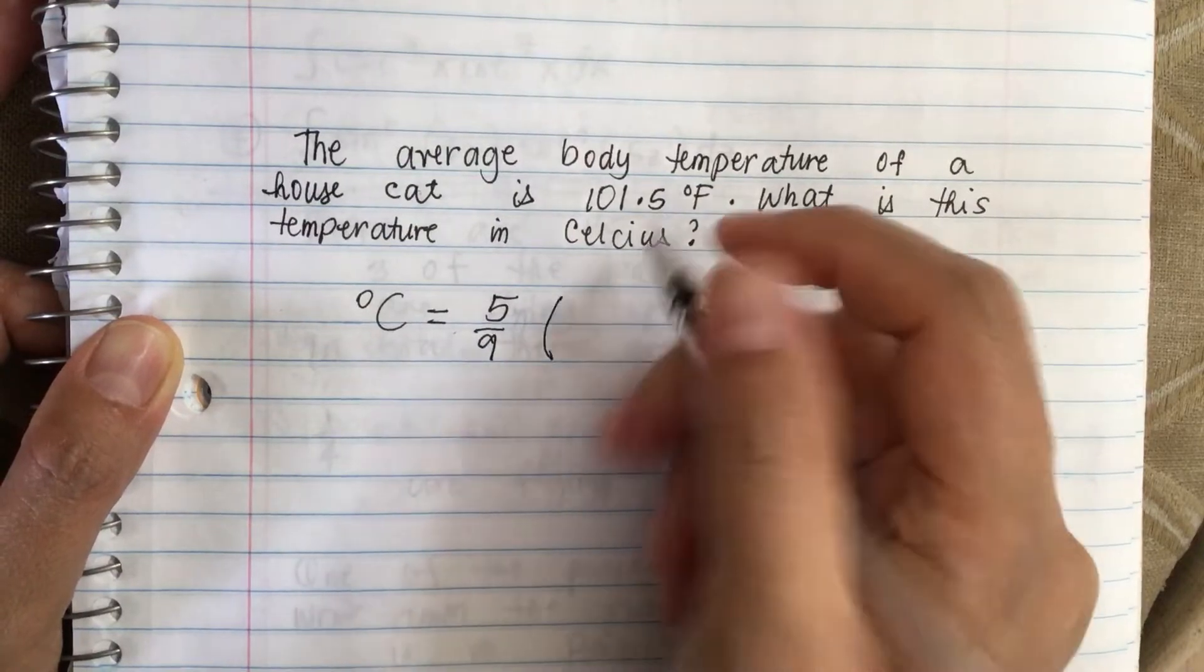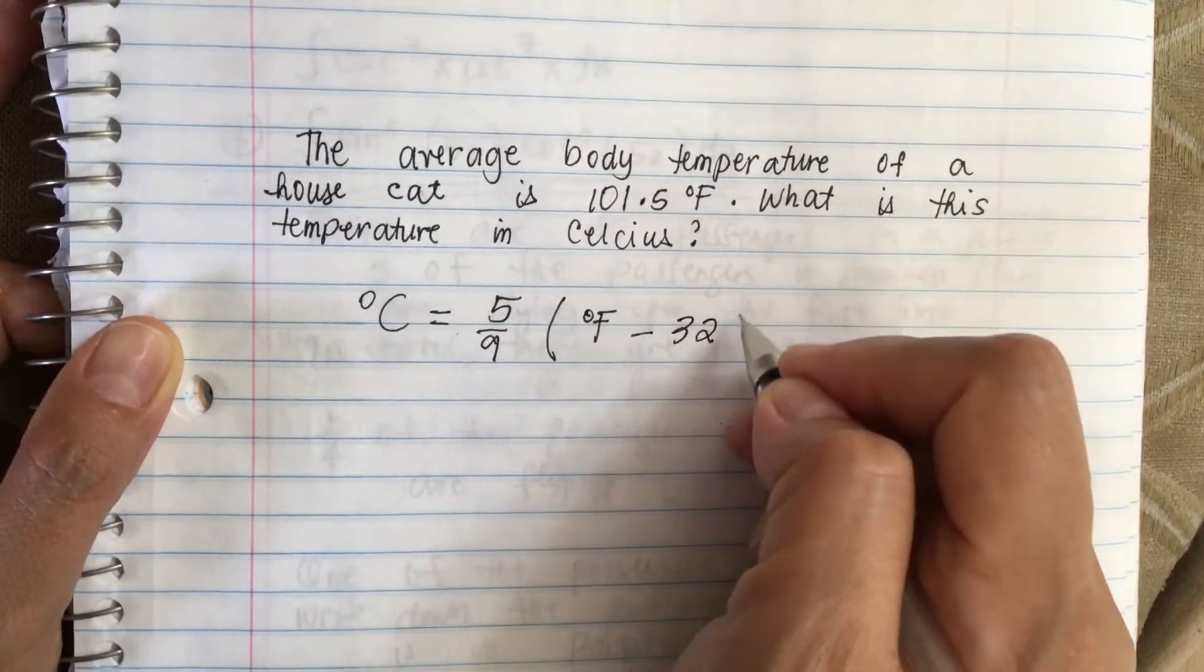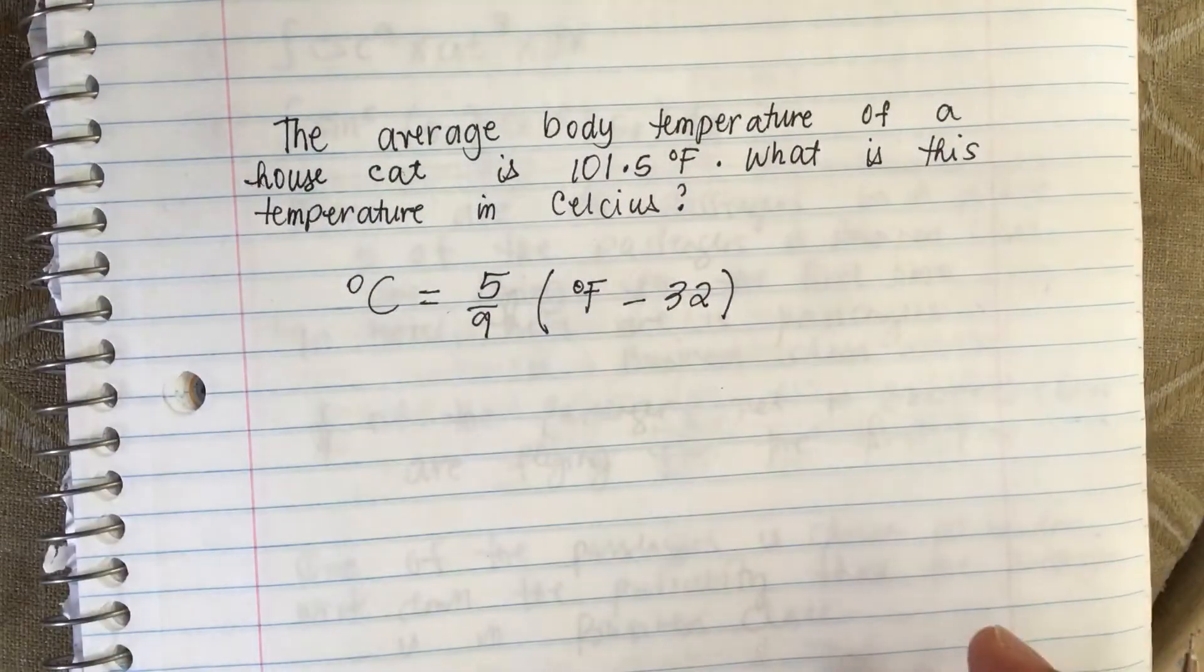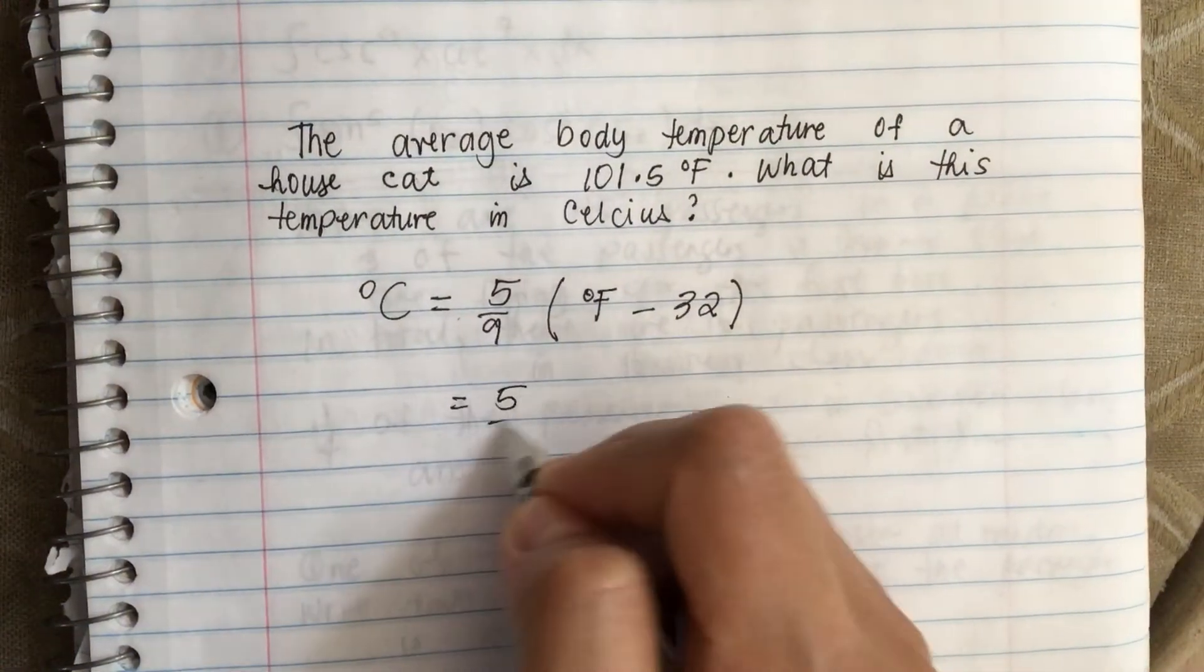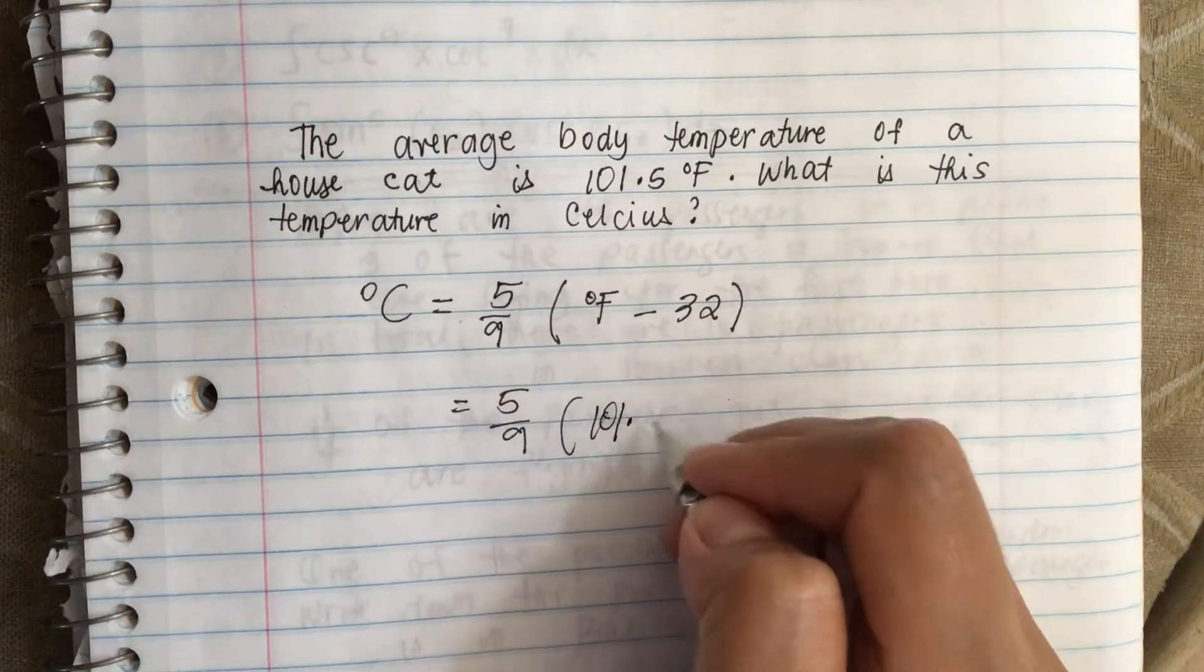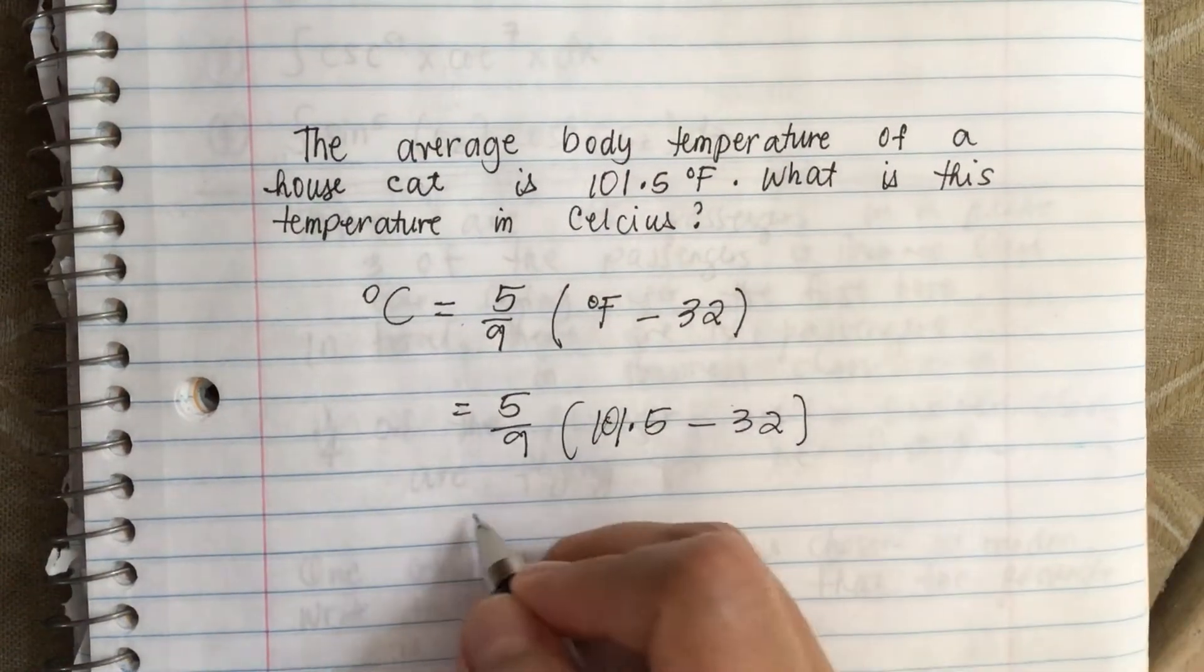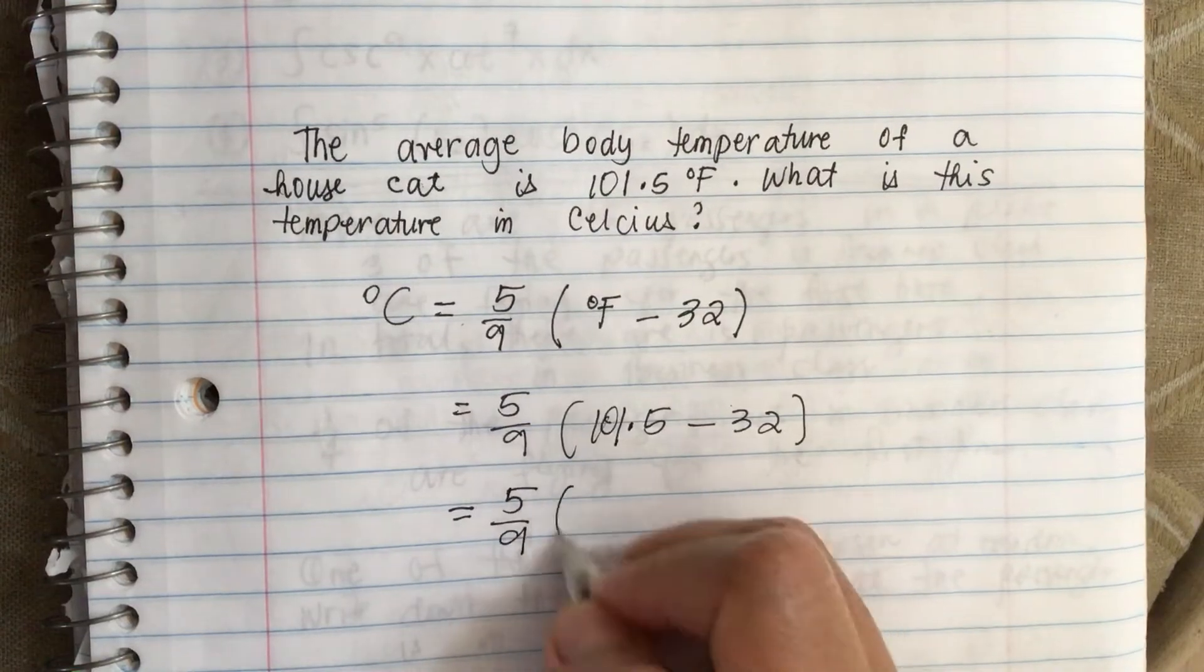9 times the degrees Fahrenheit minus 32. So now we plug in our number. So we have 5 over 9, degrees Fahrenheit is equal to 101.5 minus 32. So this is equal to 5 over 9 times...